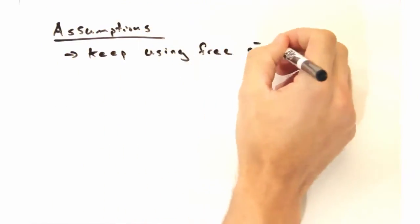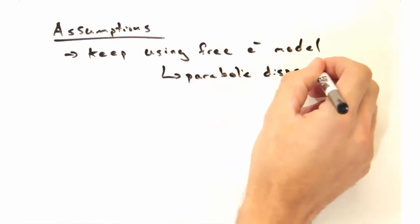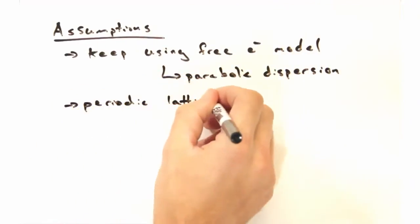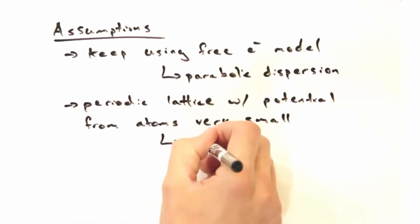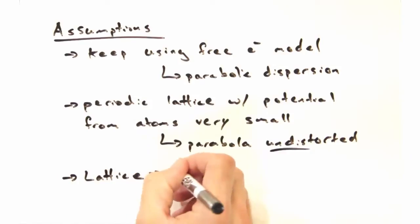Okay Nicole, what assumptions do you want to make? So it's safe to say we're going to keep using the free electron model, so we can keep that parabolic dispersion. I'd also like to invoke a periodic lattice like we did with Bloch, but let's make the potential from our atoms very small so we have no band gaps.